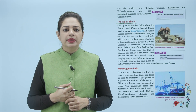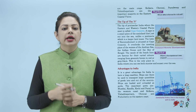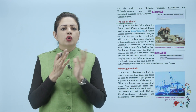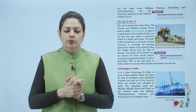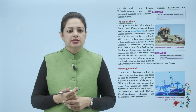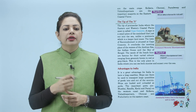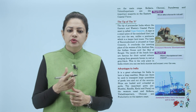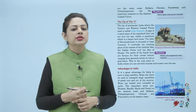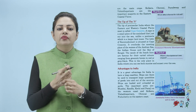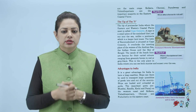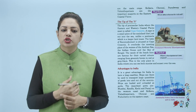Kanyakumari overlooks the meeting place of the waters of the Arabian Sea, the Indian Ocean, and the Bay of Bengal — teeno ka paani jahaan touch hota hai. The sands of the beach here are famous for their varied colors, ranging from greenish brown to red or grey black. This is the only place in India where you can see both sunrise and sunset over the sea.